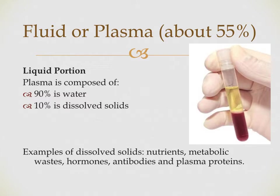The liquid portion is our plasma — about 55% of blood volume, composed of approximately 90% water and 10% dissolved solids. Those dissolved solids include nutrients, metabolic wastes like urea, nitrogen, and creatinine which are removed by the kidneys, as well as hormones, antibodies, and other types of proteins all circulating through the plasma and being carried by this liquid water.